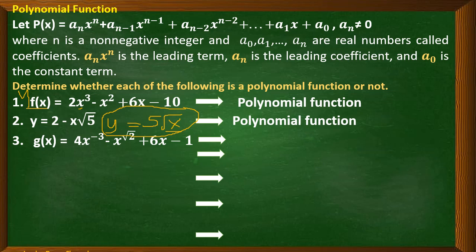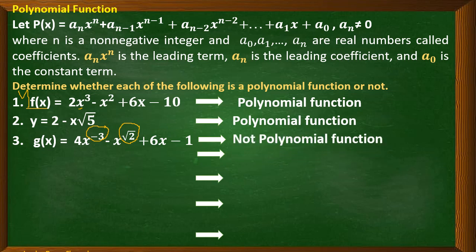Number three: if you observe, the first exponent is negative 3 and the second exponent is √2. This is not a polynomial function because the exponent is negative, and we also have an irrational number as an exponent.